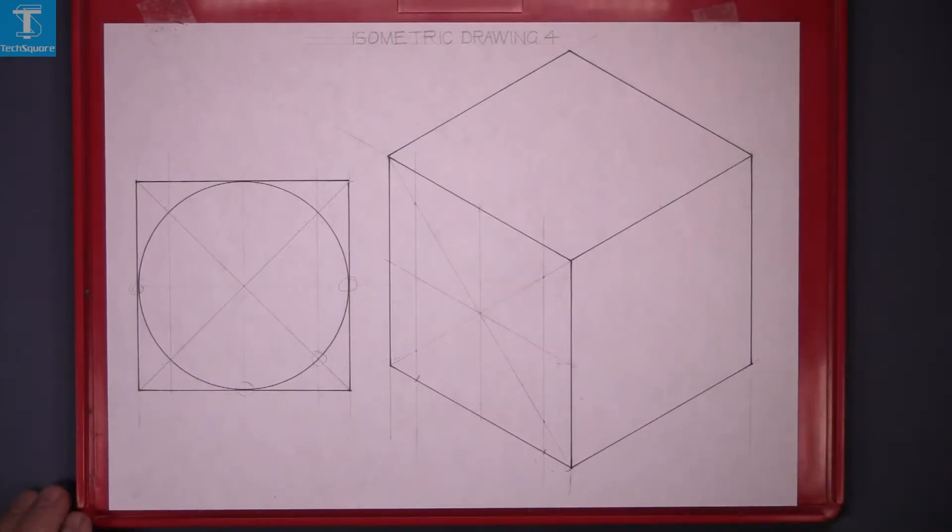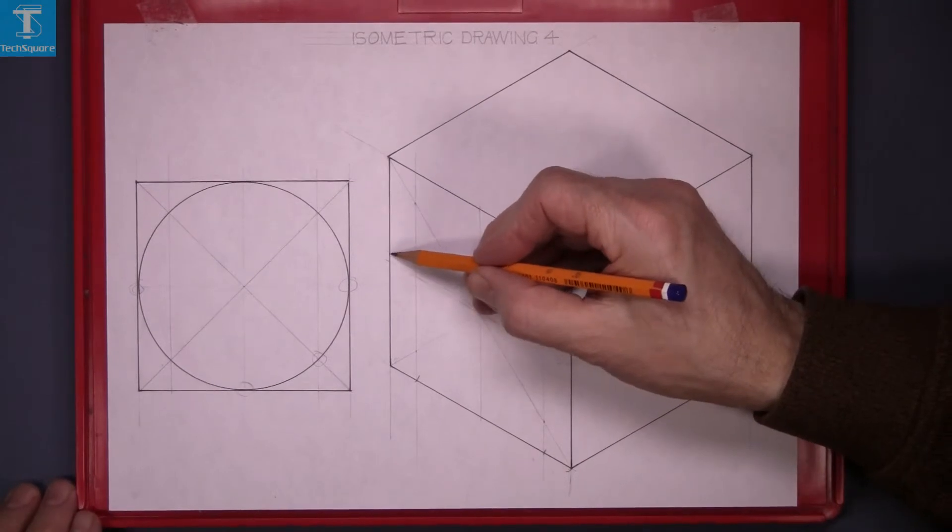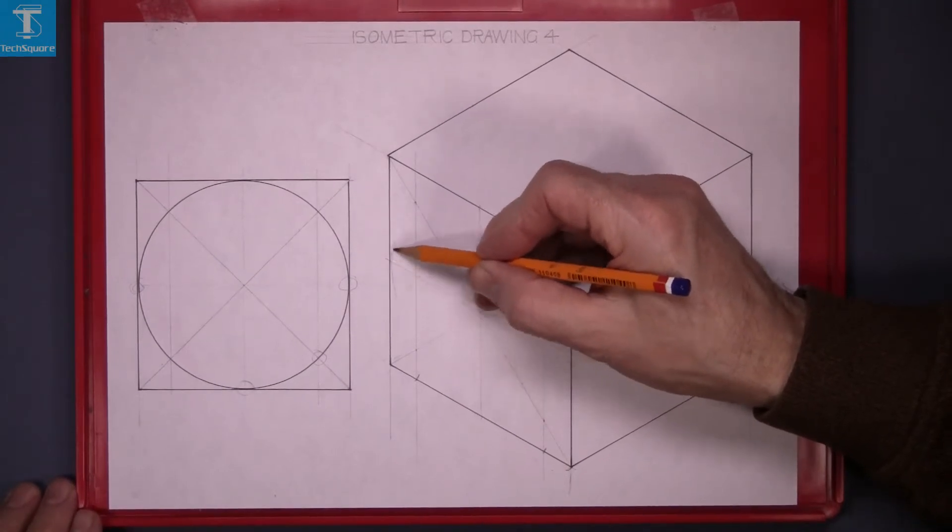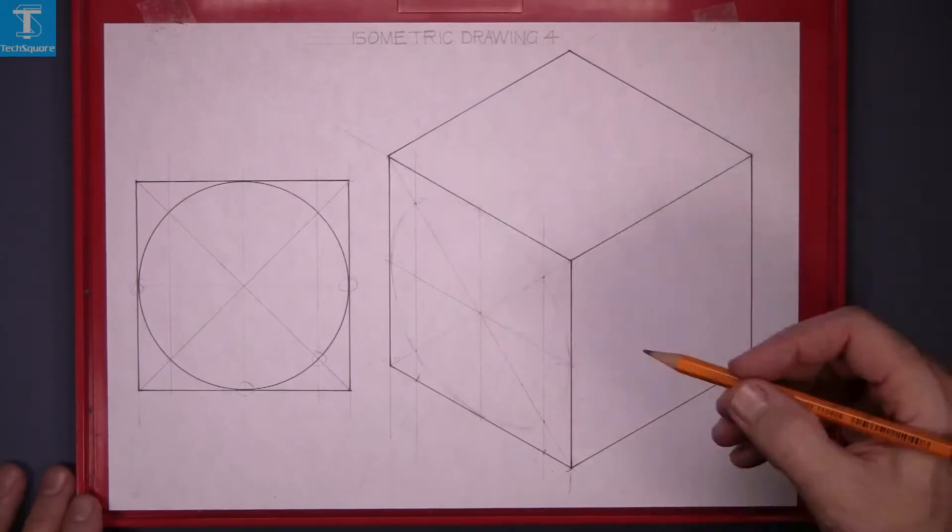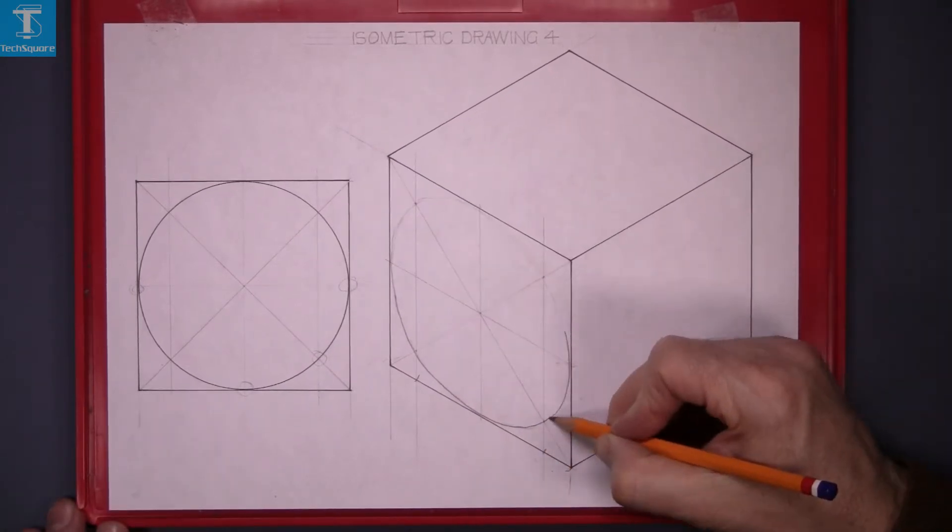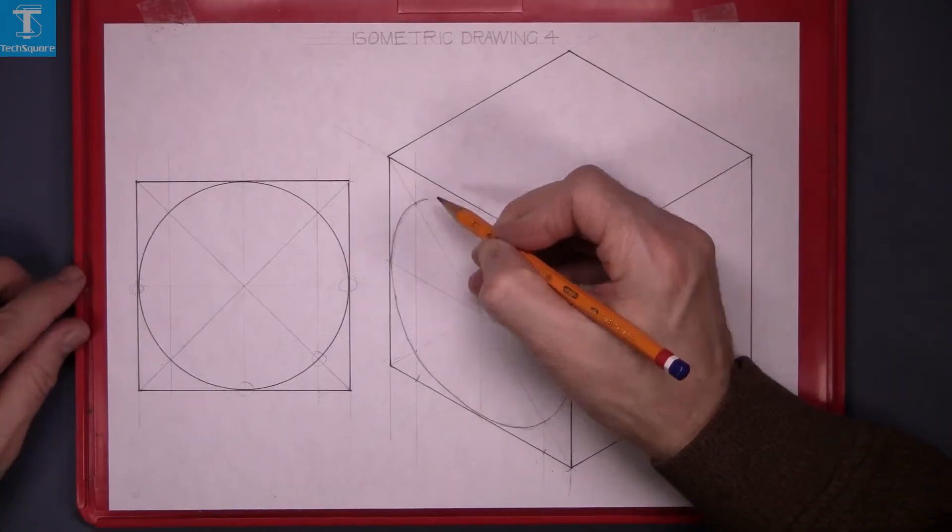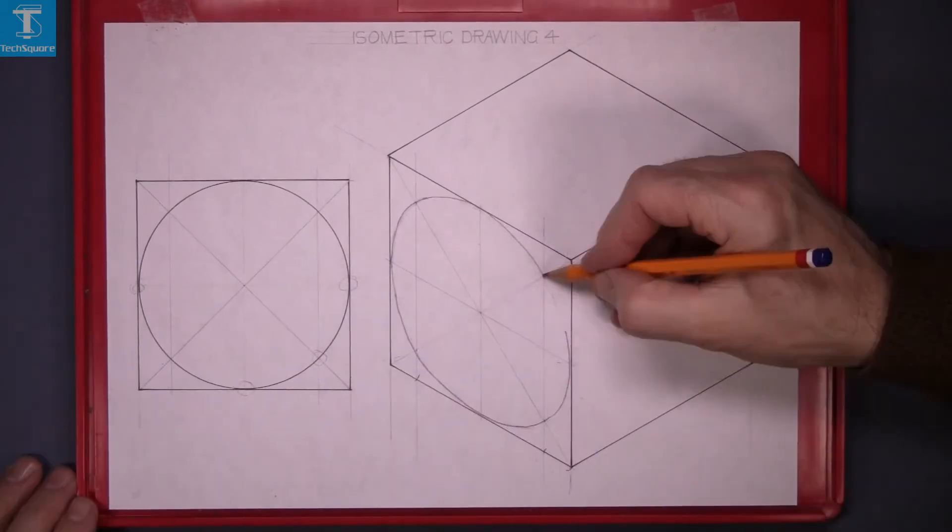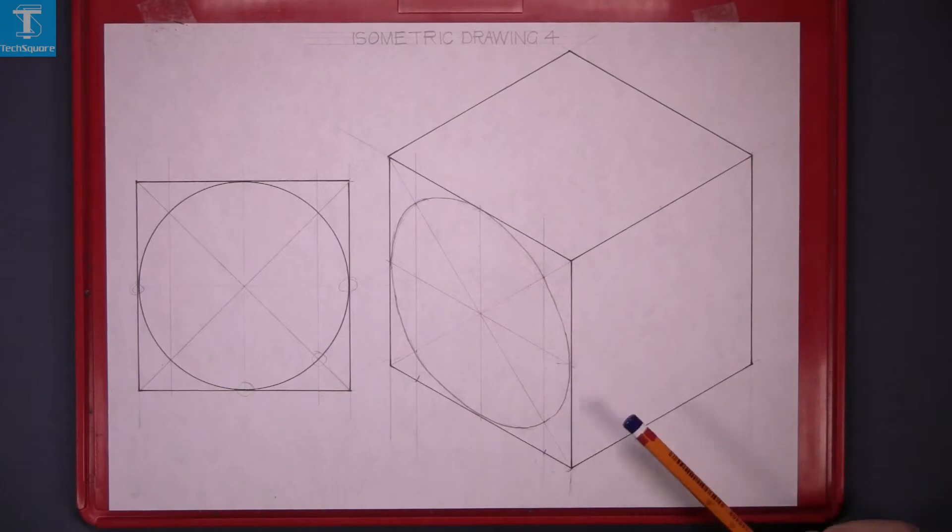And now draw a freehand curve through those points. It's just tangent to the lines and a smooth curve. And that's that drawing done.